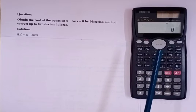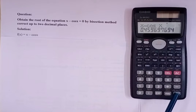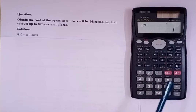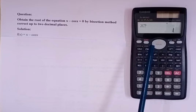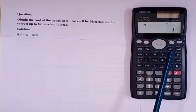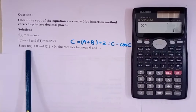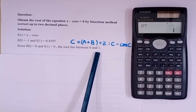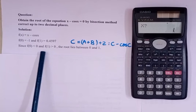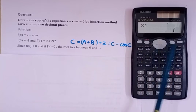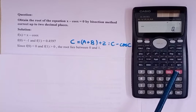Then press Equal to again and enter another value of x for b. I'm entering 1 and I get 0.4596. So a = 0 with f(a) negative, and b = 1 with f(b) positive. My a and b will be 0 and 1, meaning the root lies between 0 and 1. Next, press AC.